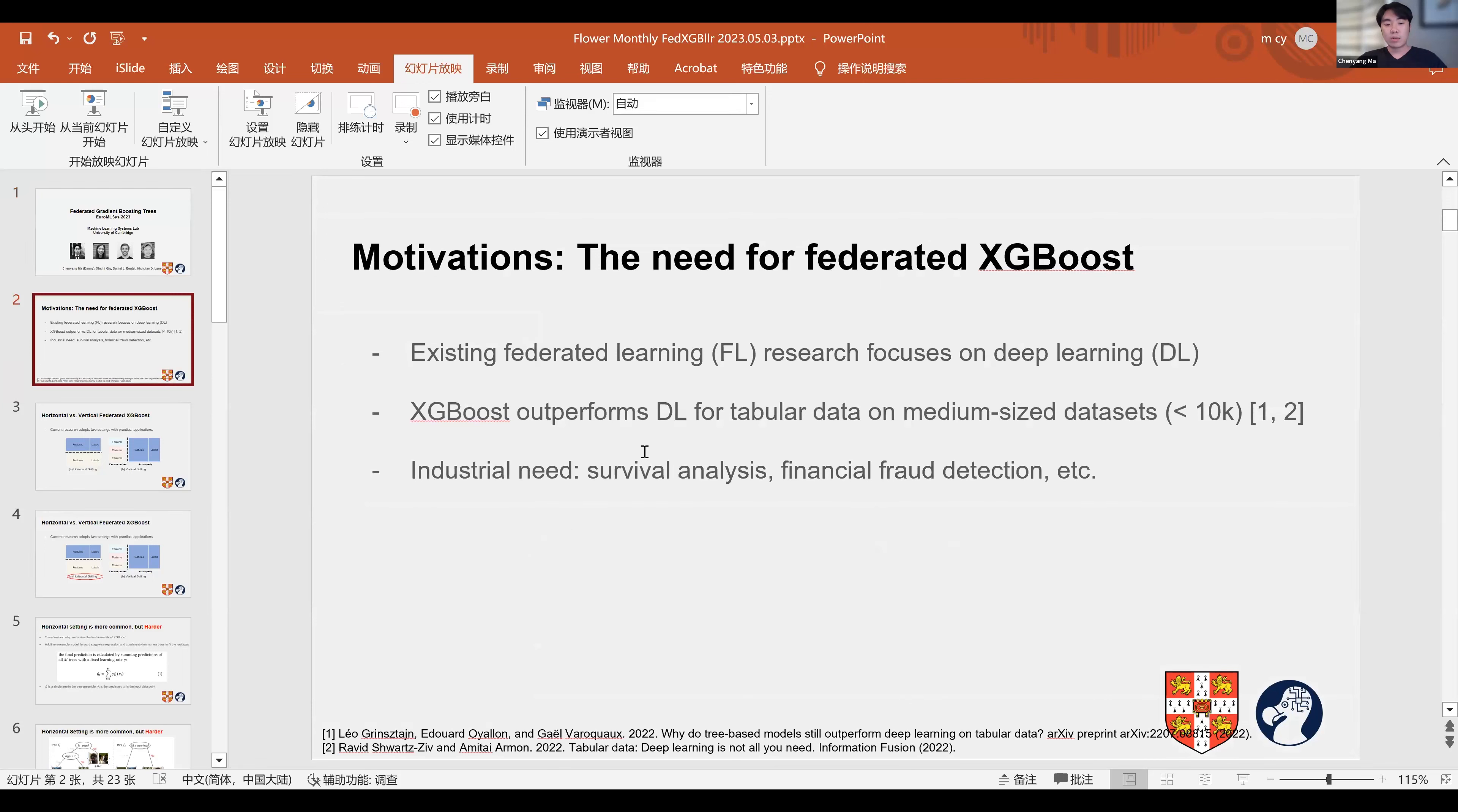First, I will talk about our motivations. Existing federated learning research mainly focuses on neural networks. For example, mainstream strategies like federated averaging and federated proximal all assume we are using neural networks. However, XGBoost is also very powerful on tabular data sets under 10K examples.